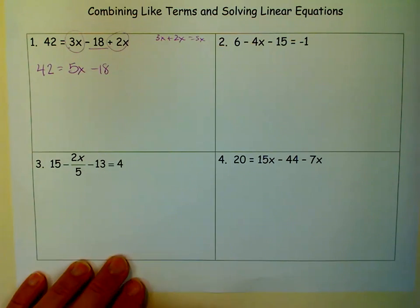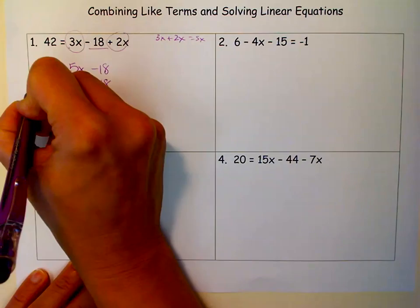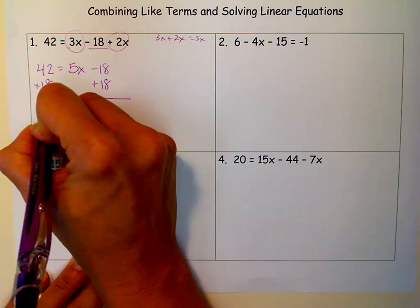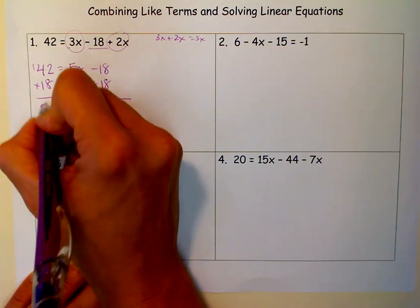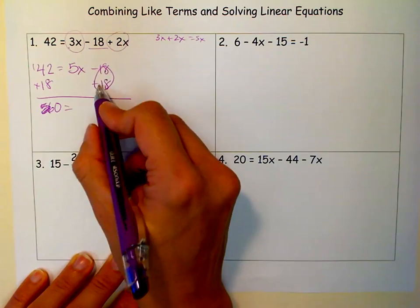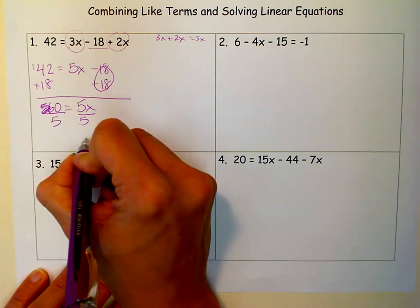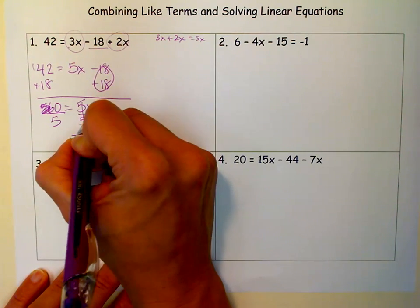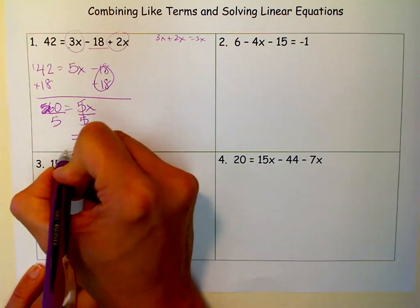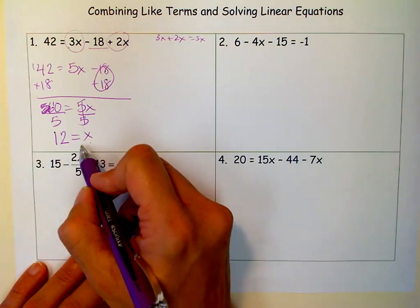So now it's a two-step equation. Now I have to get rid of the constant term first, so I add 18 to both sides. 8 plus 2 is 10, carry the 1, so that makes that 60, equals, that zeros out because 18 minus 18 is 0, and 5x. So now I have to divide by 5 on both sides, and x equals, because 5 divided by 5 is 1, and 1 times x is x. 60 divided by 5, 5 goes into 6 one time with 1 left over, goes into 10 two times. So 60 divided by 5 is 12.